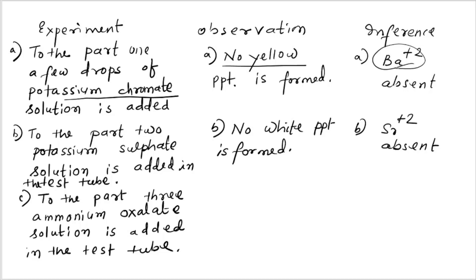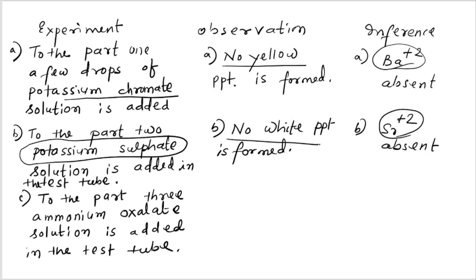To part one, potassium chromate is added drop by drop — no yellow precipitate is formed. No yellow precipitate means Ba²⁺ is absent. To part two, potassium sulfate solution is added — no white precipitate is formed, meaning Sr²⁺ is also absent. So both Ba²⁺ and Sr²⁺ are absent from the given salt.